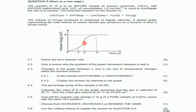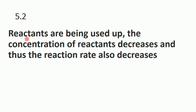Question 5.2 says: give a reason why the gradient of the graph decreases between t2 and t3. Between t2 and t3 the curve is becoming less steep, meaning the gradient is decreasing. The reason is that reactants are being used up — as the reaction progresses, the concentration of the reactants decreases, and therefore the reaction rate also decreases.